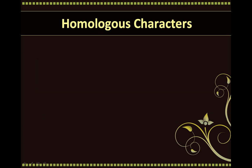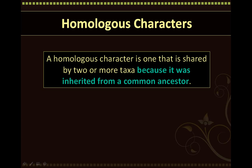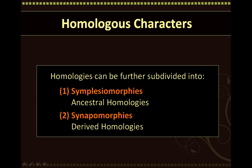Now let's discuss homologous characters. A homology, or homologous character, is a character that is shared by two or more taxa because it was inherited from a common ancestor. Homologous characters are characters that are shared through descent. Homologous characters can be further subdivided into simplesiomorphies, which are ancestral homologies, or synapomorphies, which are derived homologies.